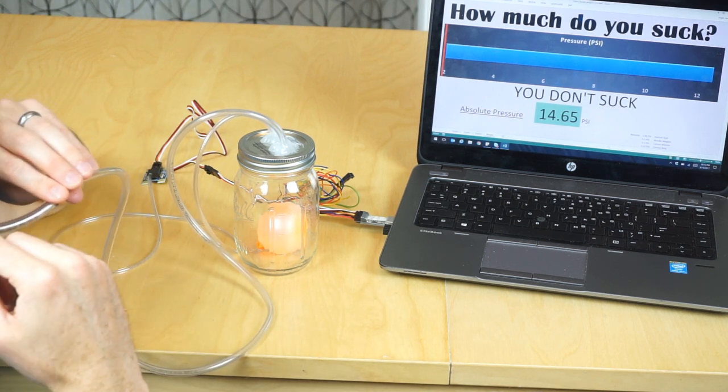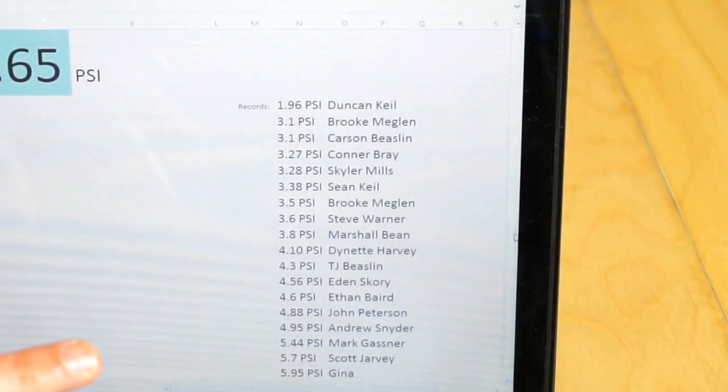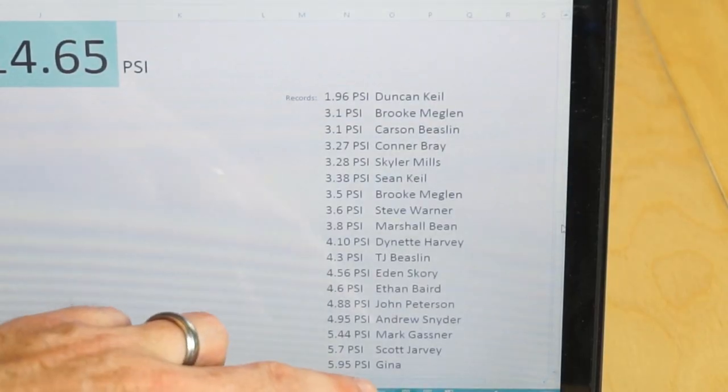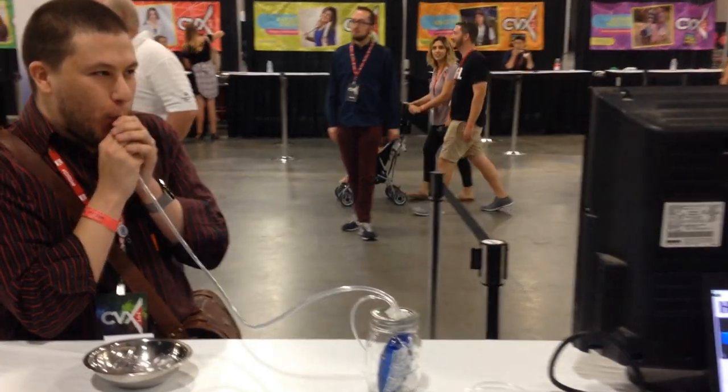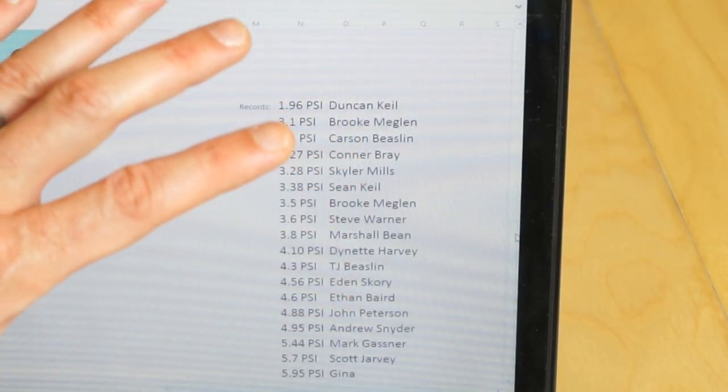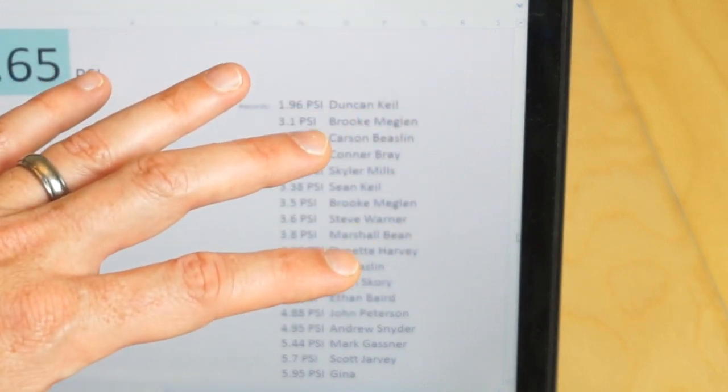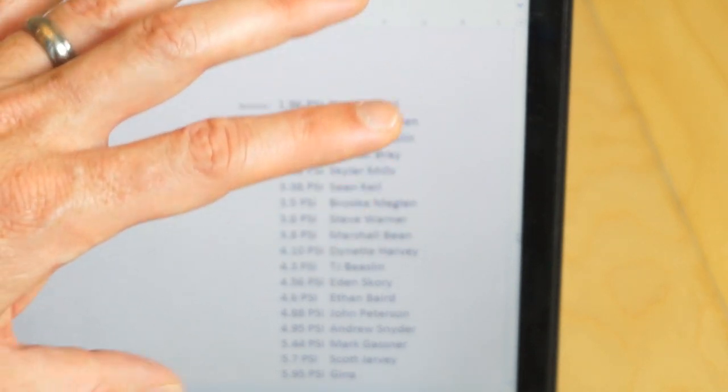I kept track of the winners at CVX live that came to my booth and sucked their hardest. These are the top 20 people starting at around 6 psi all the way down to our winner Duncan Kill who was at 1.96 psi. Keep in mind this was in Salt Lake City, so the pressure was around 2 psi lower already, so they had a little bit of advantage. But as it gets down to lower and lower pressure, it gets exponentially harder to suck.